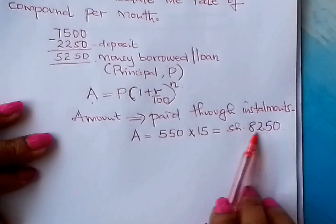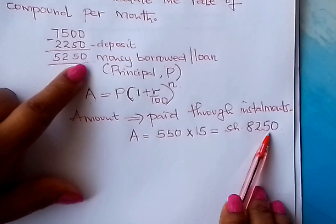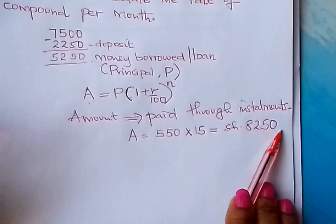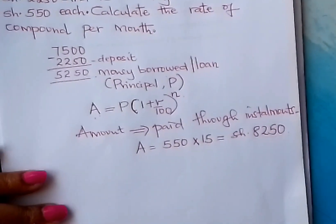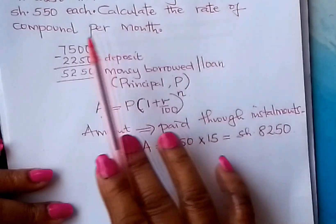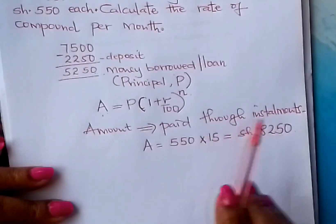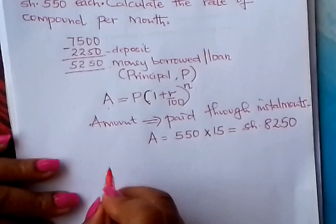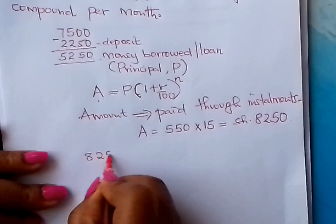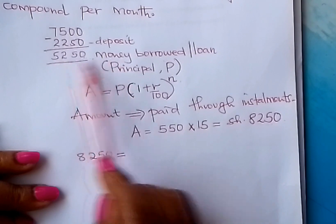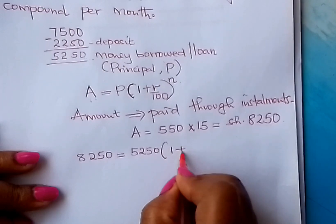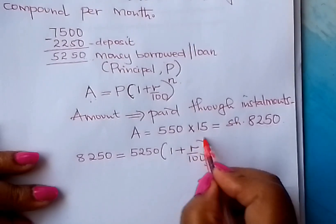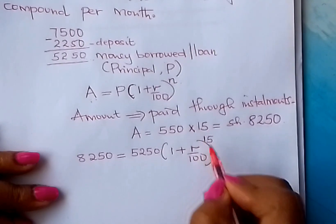You can already see that it has interest. It was 5,250, learner, and now it is 8,250 — an interest of 3,000 shillings. We are told to calculate the rate of compound interest per month. So you come and fix this A where we have A in the formula. So: 8,250 is equal to our principal 5,250 in brackets, 1 plus R over 100, raised to N. Your N is the number of months, and that is 15 in this case.